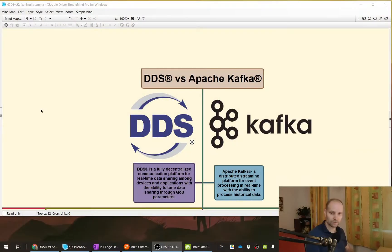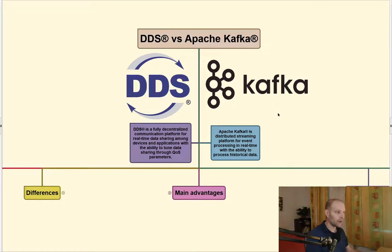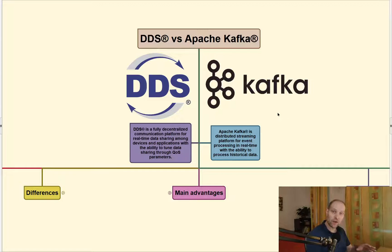Let's start. So what is the DDS technology? DDS technology is fully distributed and it is a fully decentralized communication platform for real-time data sharing between devices and applications, and this technology has the ability to tune the data sharing parameters through QoS parameters so you can configure it.